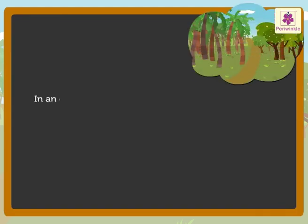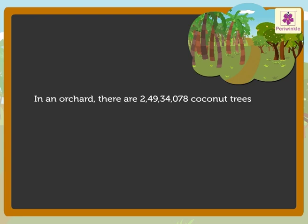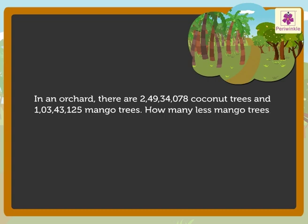In an orchard there are two crore forty nine lakh thirty four thousand seventy eight coconut trees and one crore three lakh forty three thousand one hundred twenty five mango trees. How many less mango trees than coconut trees are there in the orchard?